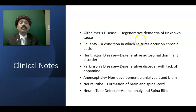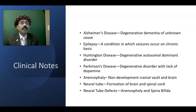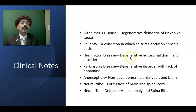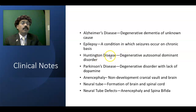Epilepsy is a condition in which seizures occur on a chronic basis. It may be a complication of brain injury, difficult delivery, or scar tissue formation, leading to abnormal electrical circuits. Huntington's disease is a degenerative autosomal dominant disorder affecting the caudate nucleus of the basal ganglia, causing choreiform movements and behavioral changes, typically appearing after age 35 and running in families.